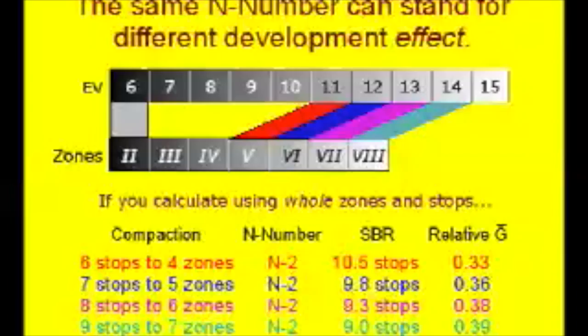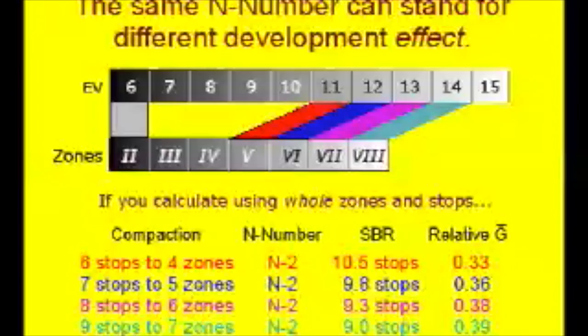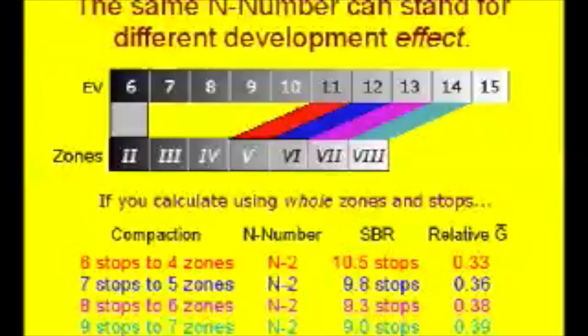N numbers have no universal meaning because they can be calculated in different ways. For example, bringing EV14 into alignment with zone 8 to restore the nine-stop range to the normal seven zones can be called N-minus-2. But N-minus-2 can also refer to shifting EV11 into alignment with zone 5. In this case, a six-stop section of the total range is compacted into four zones, so each zone will contain one and a half stops. The seven normal zones then contain a total subject range of ten and a half stops.